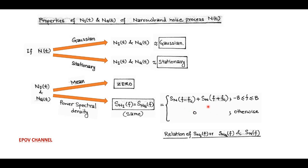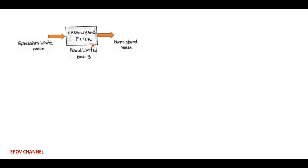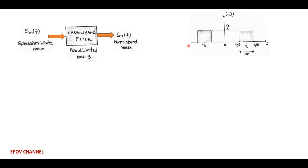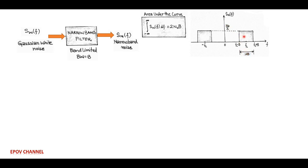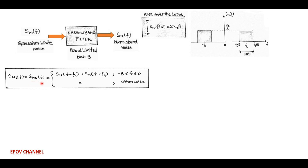To explain this relationship more clearly, consider a band-limited narrowband filter of bandwidth B. Its input is Gaussian white noise with PSD S_w(f) and the output is narrowband noise with PSD S_n(f). The narrowband noise spectrum is centered at ±fc. The area under this curve — the integral of S_n(f) from −∞ to ∞ — equals 2·N0·B. Now, S_n(f − fc) is obtained by shifting the spectrum right by fc, moving the left portion at −fc to the origin and the right portion at +fc to 2fc.